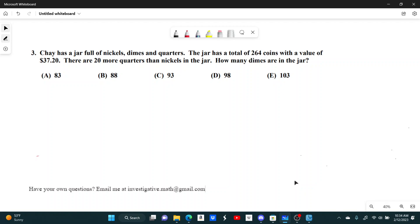This is a pretty classic system of equations question. I'm going to label nickels, dimes, and quarters as x, y, and z. So x is the number of nickels, y is the number of dimes, and z is the number of quarters.